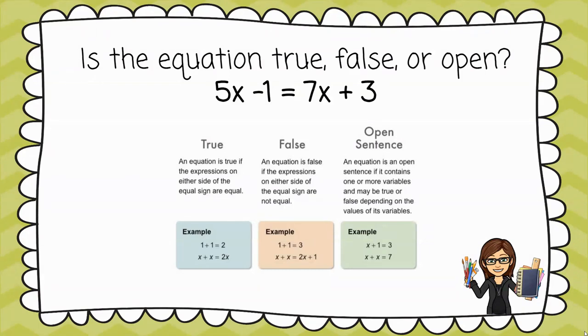For example, in the pink box, 1 + 1 = 3. Again, it's not that 5x - 1 does not equal 7x + 3. It's just I don't know if they're equal.